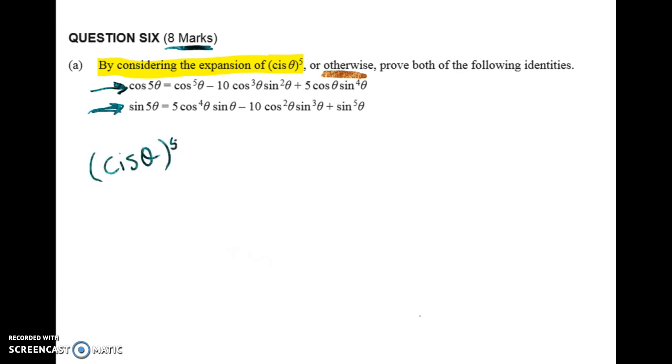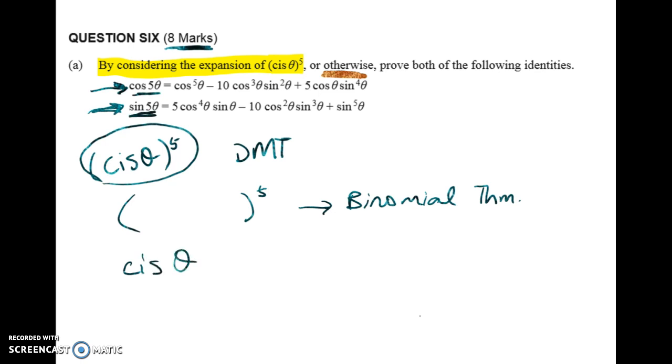Well I see cis theta to the power of five and straight away I think of De Moivre's theorem. So that's going to help me here a lot. And then I also know that I can expand things to the power of five using the binomial theorem and Pascal's triangle. If you're rusty on that, make sure you go watch one of those videos or go through delta. And then the next thing I'm thinking when I see this is what is cis theta? Well cis theta is just cos theta plus i sine theta. So this is going to come from the imaginary part of the expansion and this is going to come from the real part of the expansion. And in this case, that's about all there is to this question.